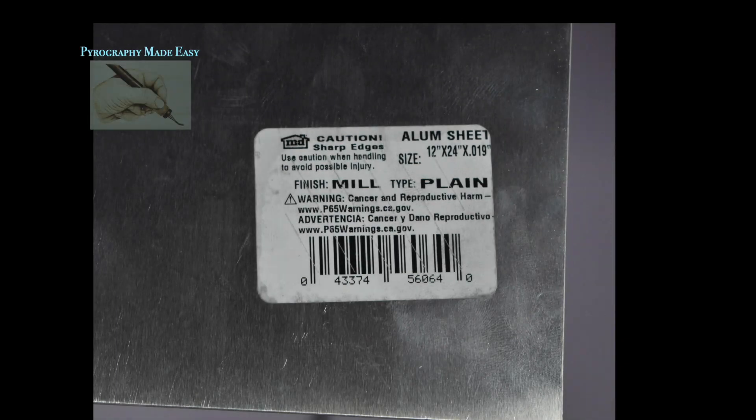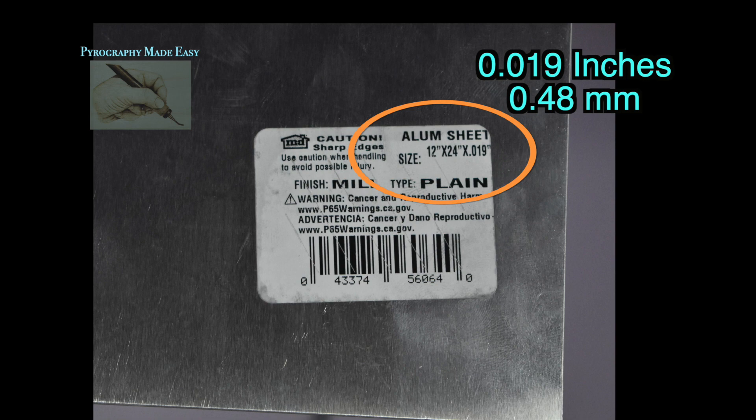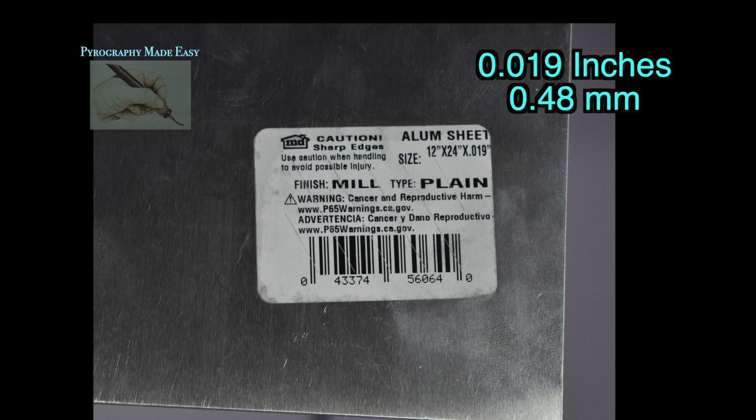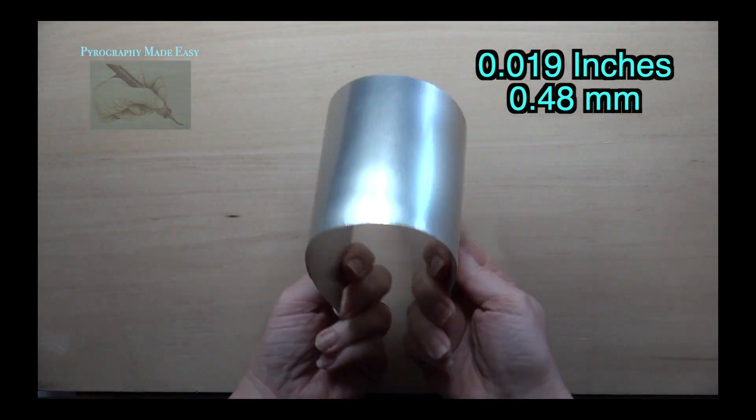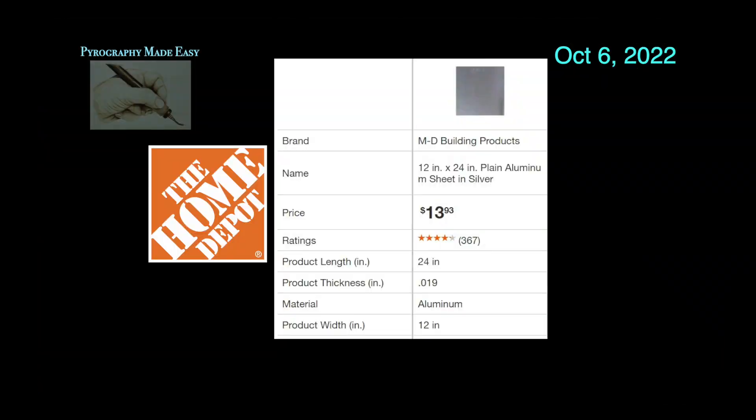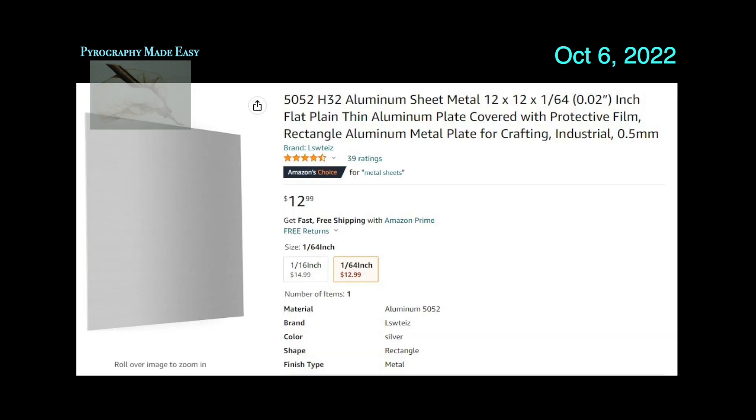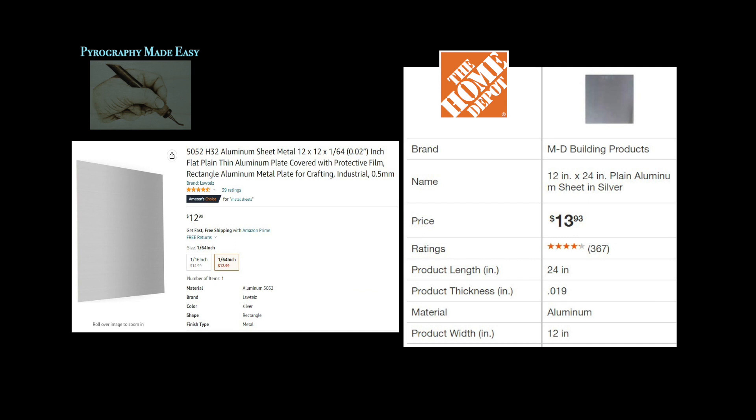Todd uses plain aluminum sheet metal that is 0.019 inches thick. This is a thin, very flexible metal that is easy to work with. On October 6, 2022 you could find it on Home Depot's website for under $14. You can also find it on Amazon and some of the listings state the thickness as 0.02 inches. I will put a link to both sites in the description below.